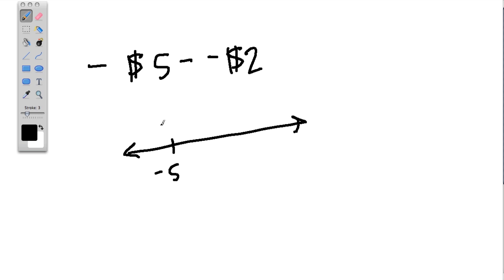When you subtract $2 from that, you would go down this way to negative 7. But we're not doing that. What we're doing is we're subtracting negative 2, which is the opposite of 2. So we go in the opposite direction. We go up to negative 3.